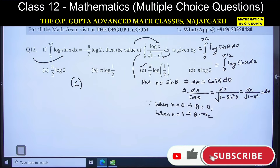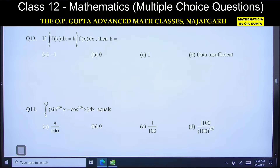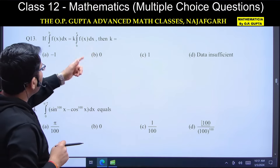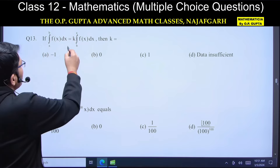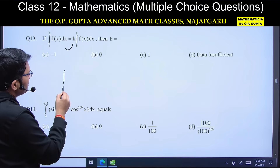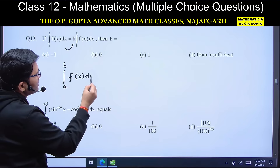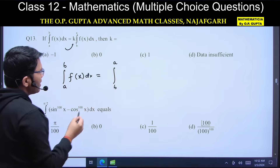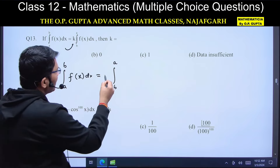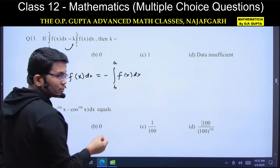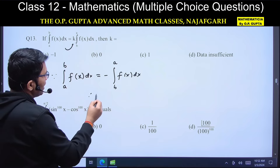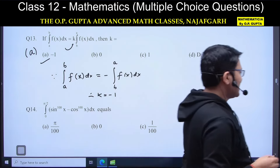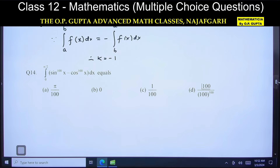Question number 13: limit a से b का integral f(x)dx, इसे k times f(x)dx with limits b से a के equal रखा है। k की value निकालनी है। जब limits interchange होती हैं तो बाहर −1 से multiply करना पड़ता है। Property use करके k = −1। Option A सही है।